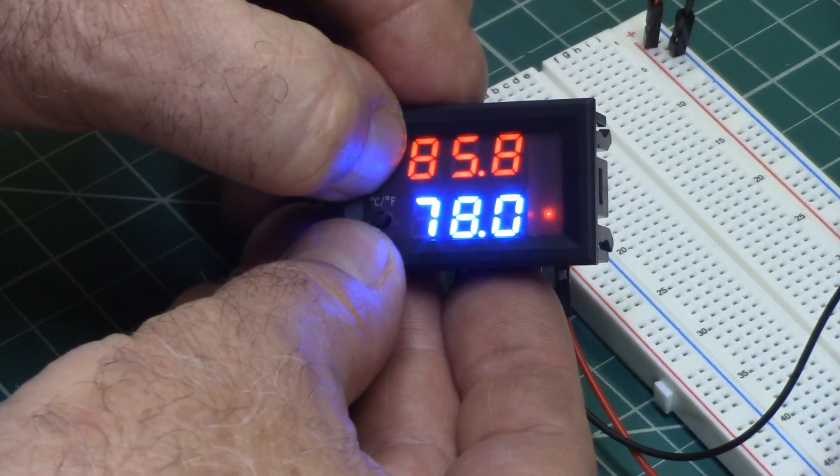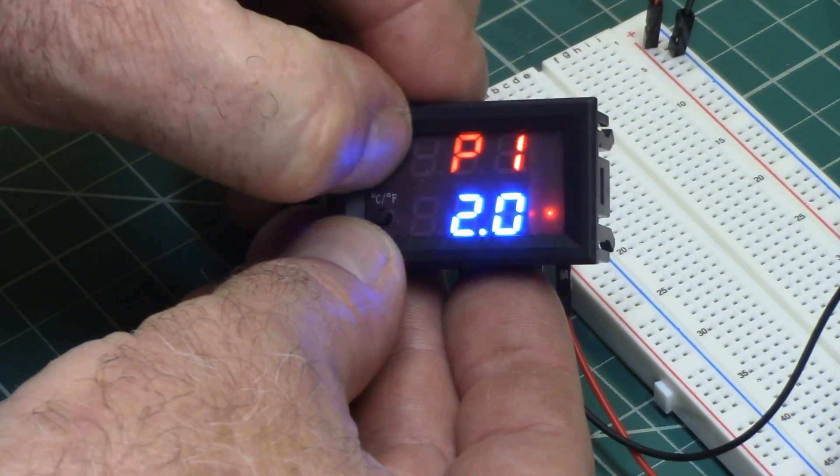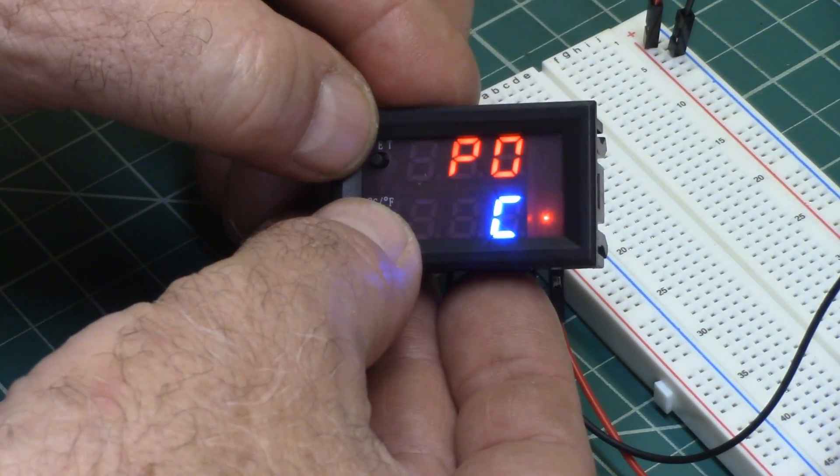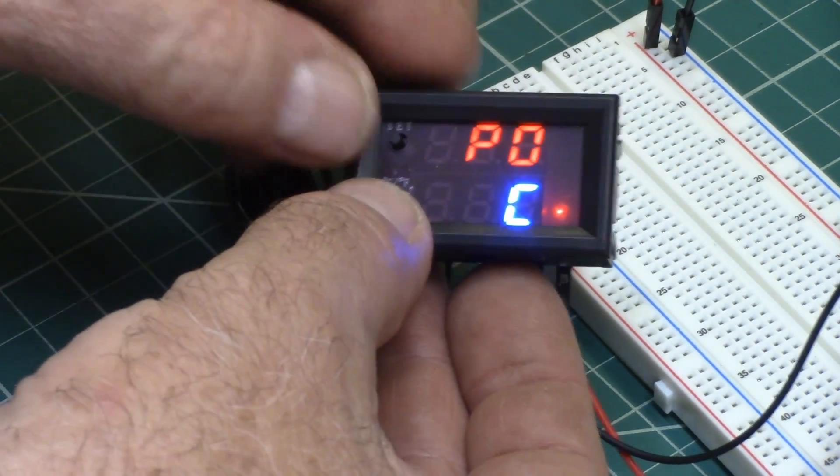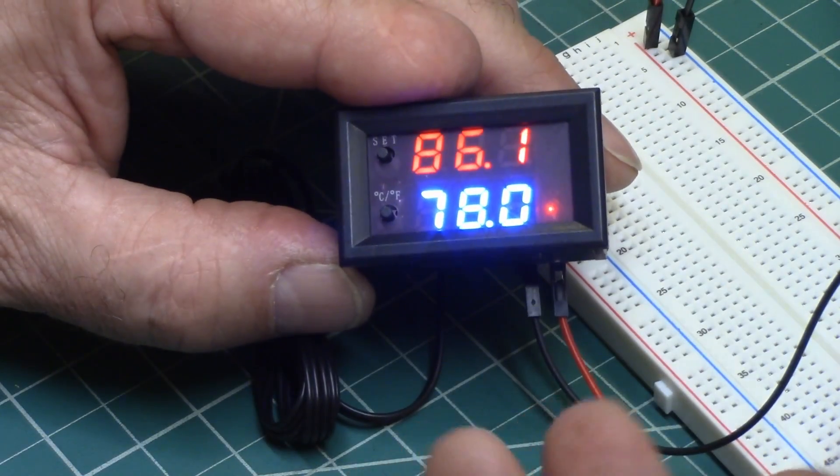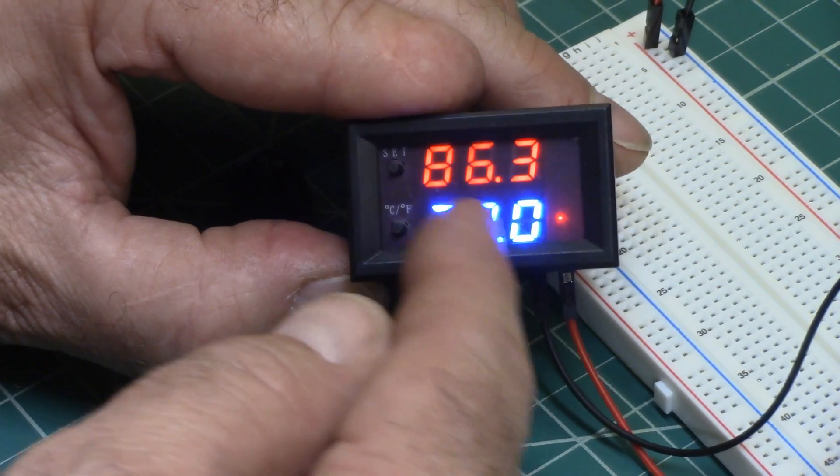Now we're going to go back in, and the first one, that's P1, that's what we just did. And then P0, you're setting that to say whether you want it to be in cooling mode or heating mode.